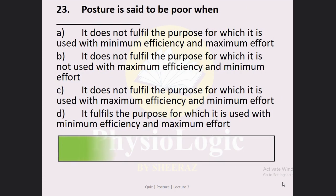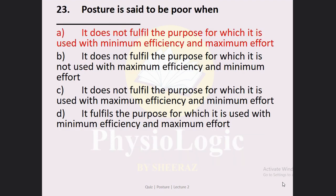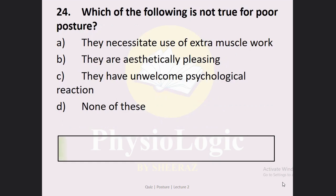Next MCQ: The posture is said to be poor when — Option A: it does not fulfill the purpose for which it is used with minimum efficiency and maximum effort. Option B: it does not fulfill the purpose with maximum efficiency and minimum effort. Option C: it does not fulfill the purpose with maximum efficiency and minimum effort. Option D: it fulfills the purpose with minimum efficiency and maximum effort. The correct option is Option A. These conditions make up bad or poor posture. The posture is only good when it fulfills the purpose with maximum efficiency and minimum muscular effort.